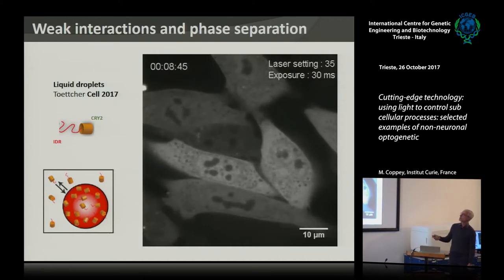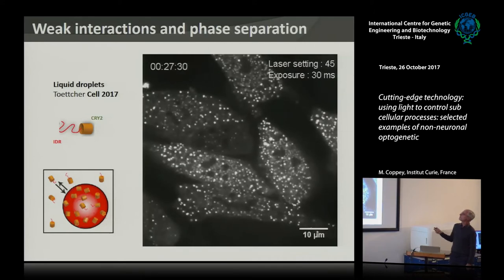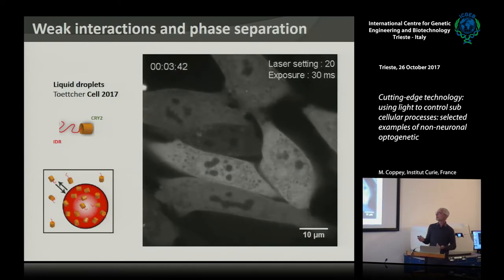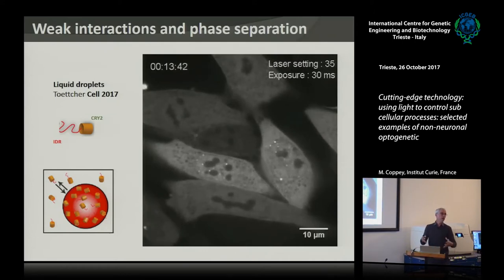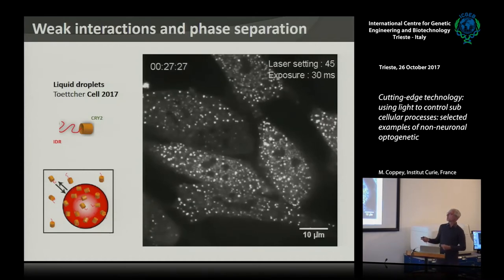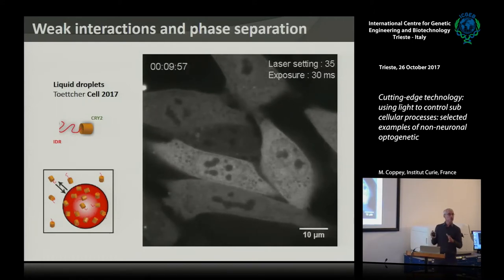In this movie they show a phase-transition system. They change the laser settings, and you see that around 40–45% laser power, you change the distribution of the protein — you phase-separate the initially cytosolic protein. The physics here is phase transition, like oil in water: oil forms droplets because it prefers to be with itself. Here, the protein is more water-like at the beginning, and with light you can turn it into oil-like oligomeric droplets.